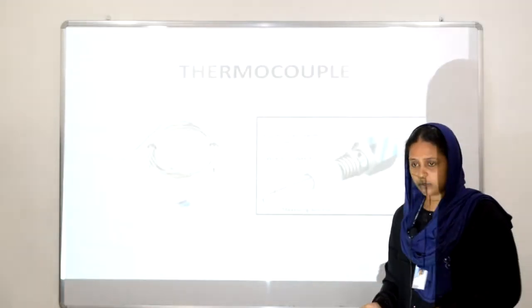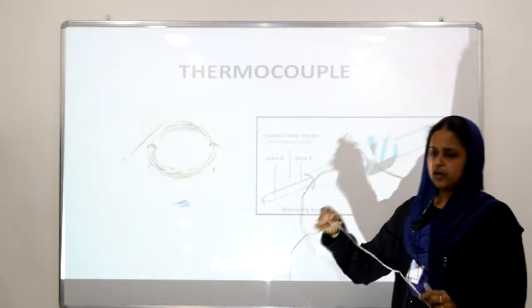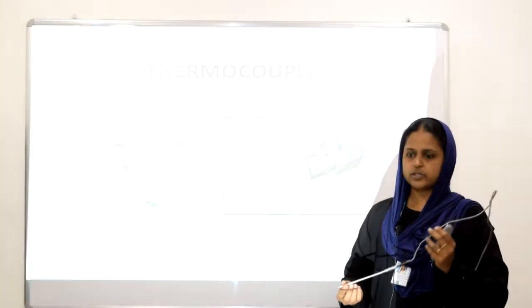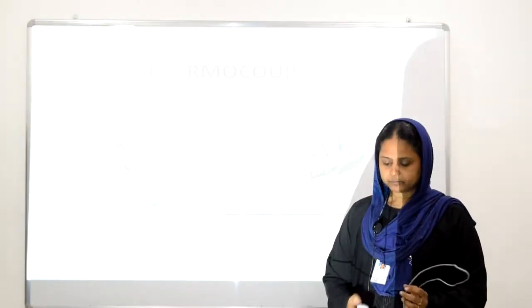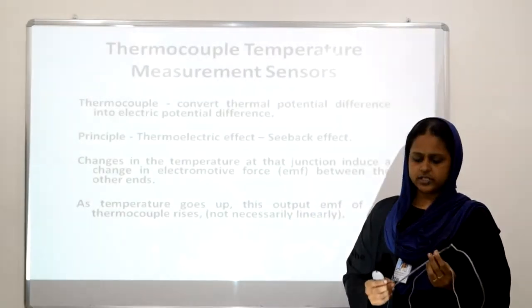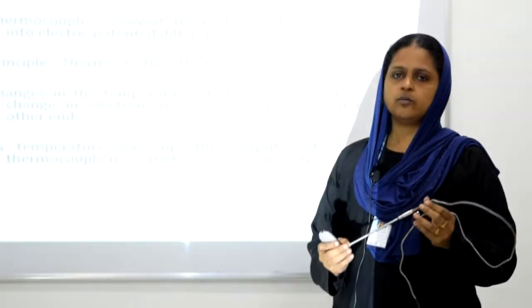This is the thermocouple. The figure shows the thermocouple — this is the physical thermocouple. It contains a sensor portion — this is the actual thermocouple. The thermocouple converts the thermal potential difference into electrical difference. It converts heat energy in the form of electrical potential difference. The basic principle of this thermocouple is called the thermoelectric effect, or otherwise known as the Seebeck effect.